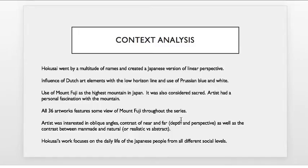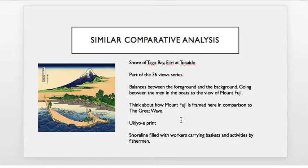The work also focuses on the daily life of the Japanese people. Moving into the comparative analysis, we see how it covers people from all social classes — from low-ranking to middle class to high class — rather than just focusing on courtesans or high-ranking royals. A similar comparative analysis I would use would be another view of Mount Fuji from within the series: the Shore of Tago Bay. I liked this artwork as a comparative because it uses boats with water in the foreground and has Mount Fuji in the background, using the same elements.